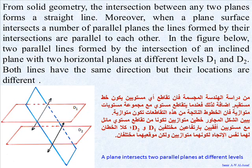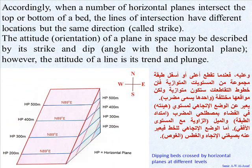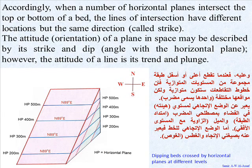Study of spatial setting of bedded rocks. From solid geometry, the intersection between any two planes forms a straight line. Moreover, when a plane surface intersects a number of parallel planes, the lines formed by their intersections are parallel to each other. When a number of horizontal planes intersect the top or bottom of a bed, the lines of intersection have different locations but the same direction, called strike. The attitude of a plane in space may be described by its strike and dip, which is the angle with the horizontal plane.